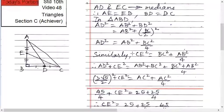Therefore, AD square plus CE square equals AB square plus BC square plus BC square plus AB square upon 4.